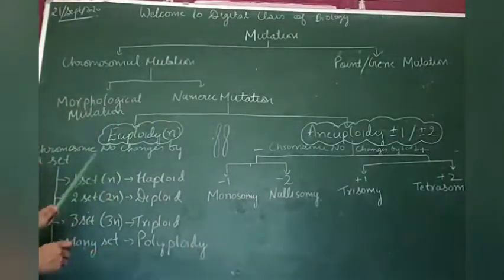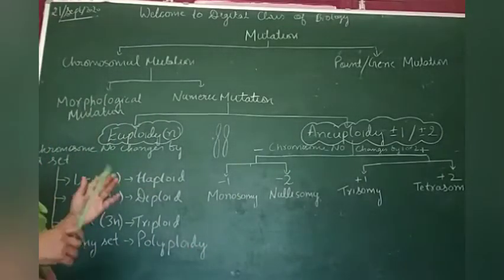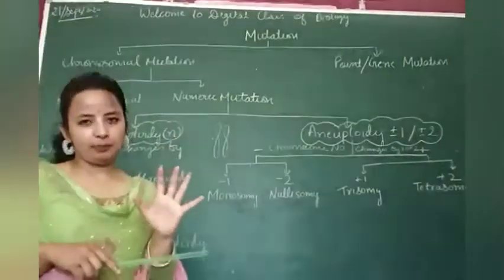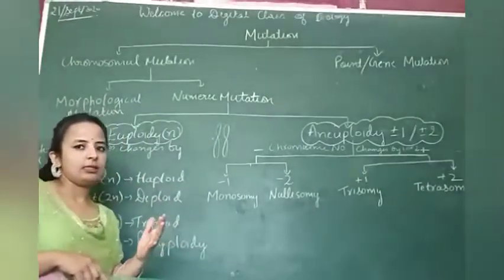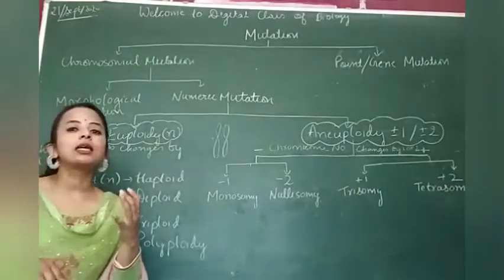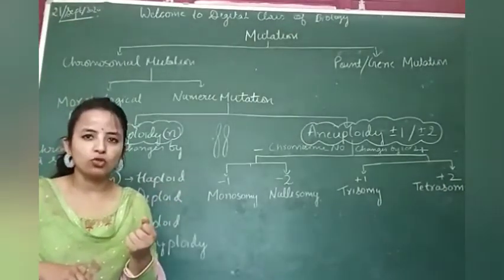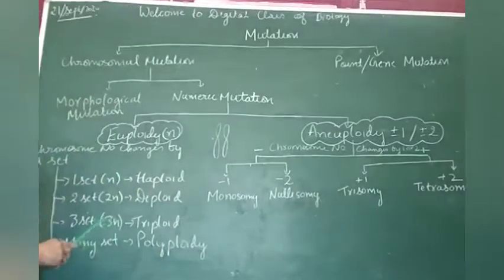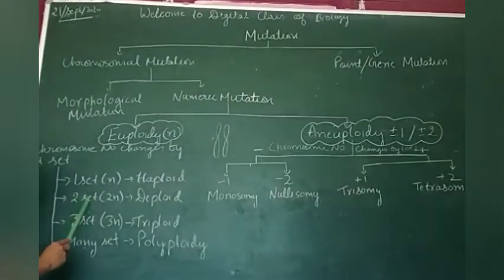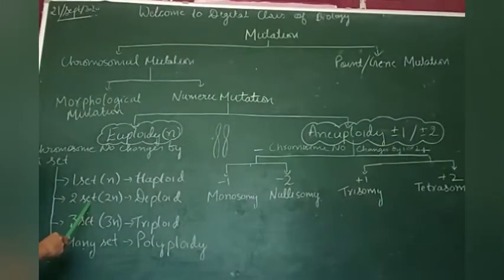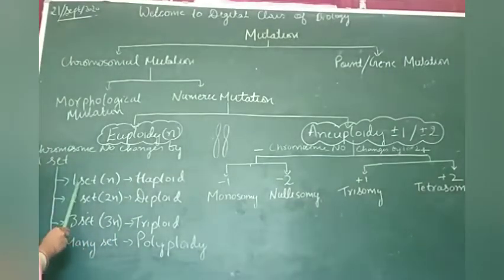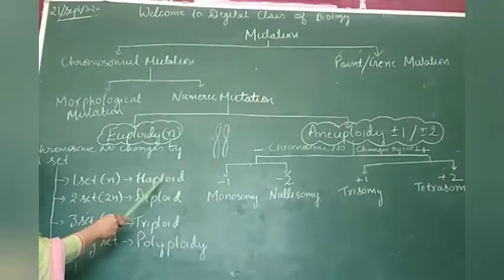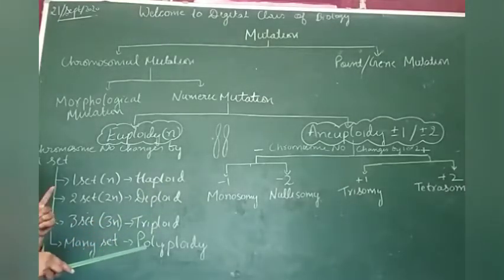What is euploidy? Here the chromosome number changes by a set. What does it mean? Students, we all know that organisms such as human beings have the right set of chromosomes. It means we have two sets of chromosomes, so we are diploid. Gametes have one set of chromosomes, so they are haploid.